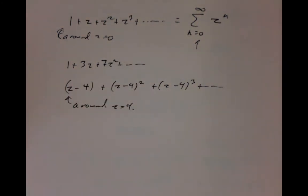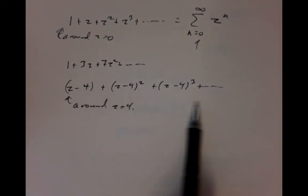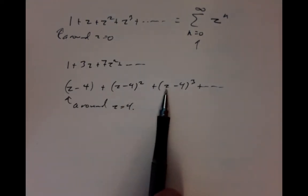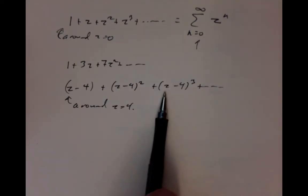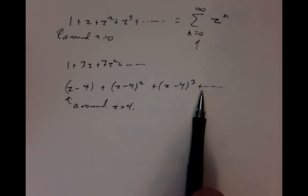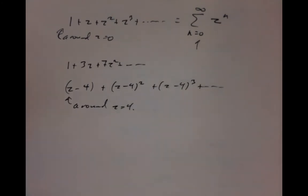What do I mean by 'around'? The idea is that if z is very close to 4, then very high powers of (z minus 4) should get very, very small very quickly. So after taking only a few terms into account, we already have a pretty good approximation to what the function actually looks like. That's not a rigorous statement, but it is often the case.